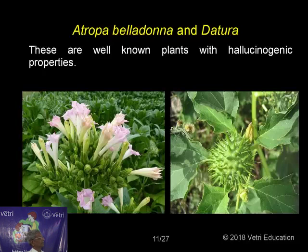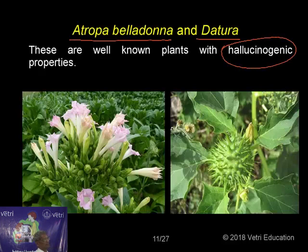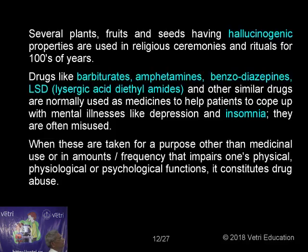A few more plants are also used as drugs: Atropa belladona and Datura. These are well-known plants with hallucinogenic properties — they produce hallucination effects. Datura has a beautiful flower top with a bunch of flowers, and that is the fruit of Datura. Several plants, fruits, and seeds having hallucinogenic properties have been used in religious ceremonies and rituals for hundreds of years.